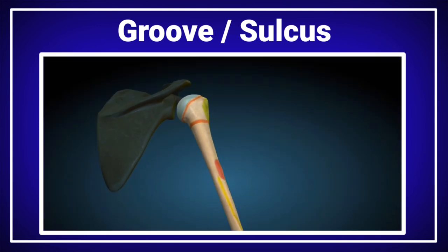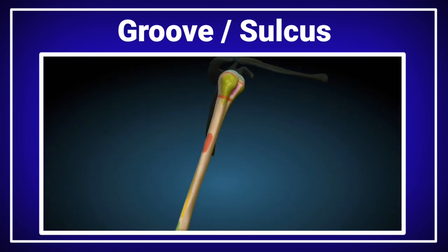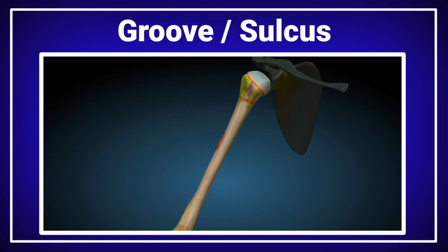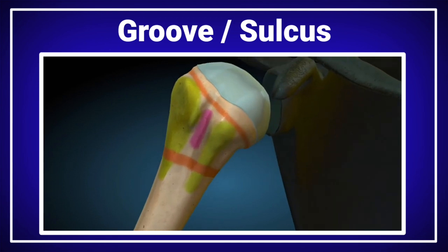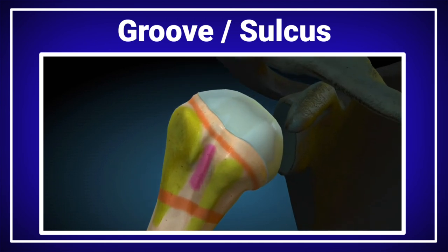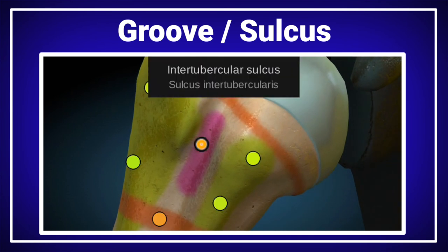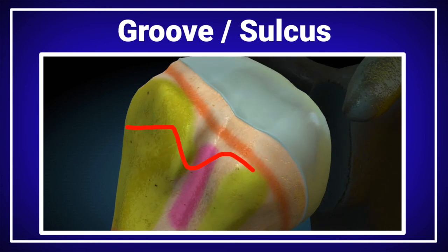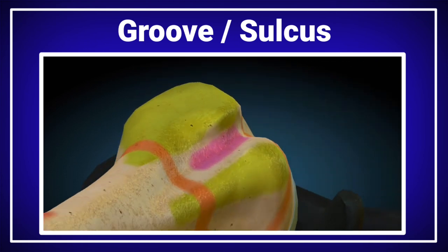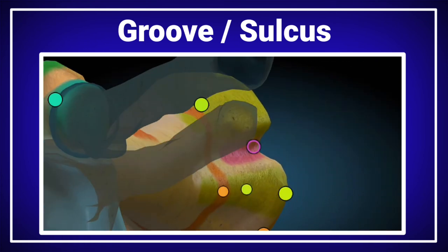Now let's discuss the sulcus of the humerus bone. There are many sulcuses on the humerus bone; however, we will discuss the inter-tubercular sulcus. This is the inter-tubercular sulcus of the humerus bone.